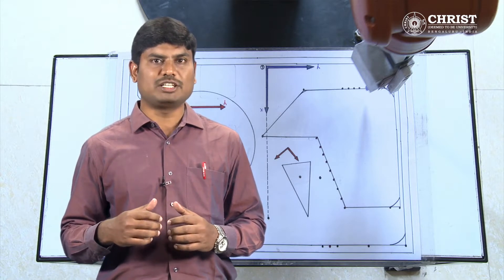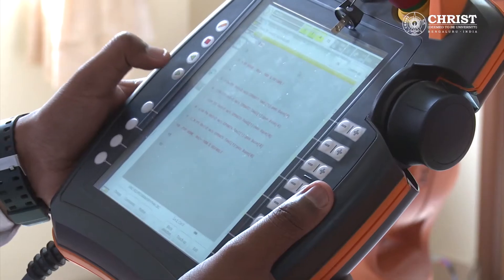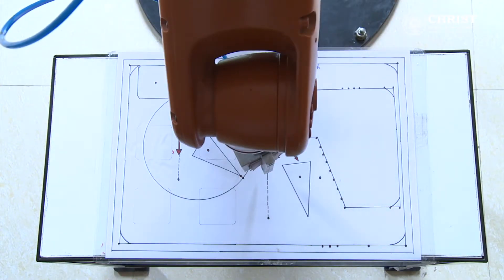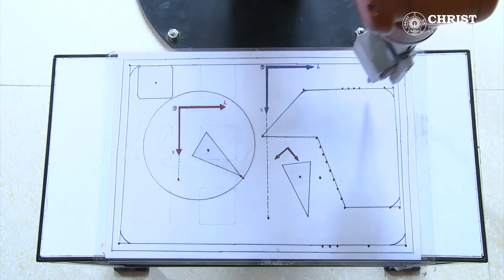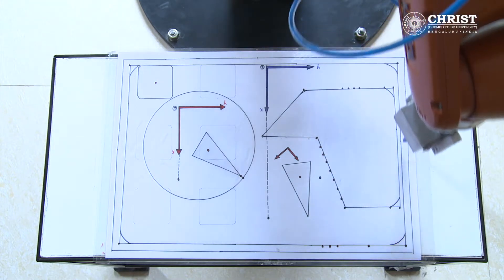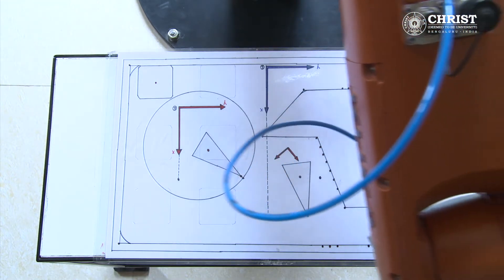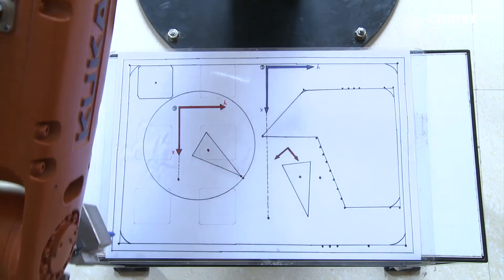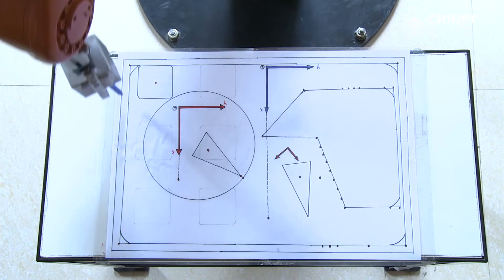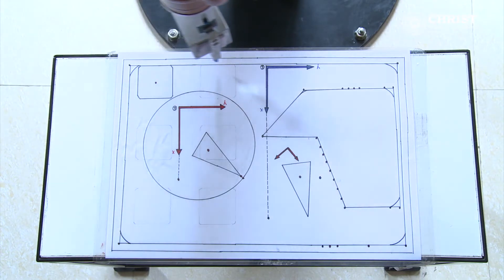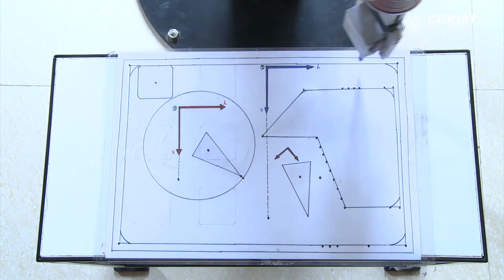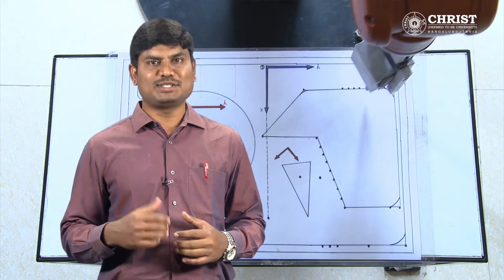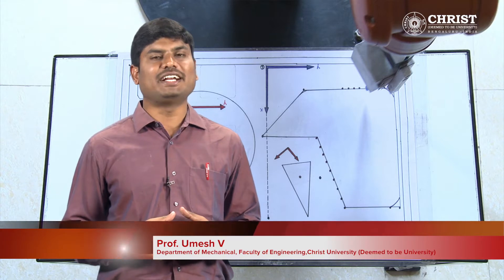Hold down the deadman switch partially and press the start key. This will take the robot to its home position. Release the start key and press it again — the robot will go to its first position. Once again, release the start key and press it; it will take the robot to the second position. Similarly, drive the robot to the third, fourth, and from the fourth position back to its initial position by releasing and pressing the start key. This is how we execute the linear command in T1 mode.